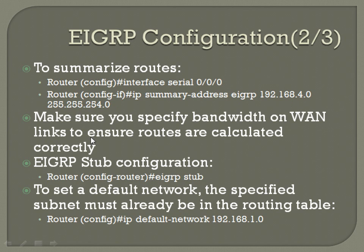Make sure you specify bandwidth on WAN links to ensure routes are calculated correctly, using the bandwidth command. On serial interfaces like T1s, you might have a fractional T1 and not be getting the full 1.544 megabits per second. EIGRP, unless you specify the bandwidth, always assumes every serial link is a full T1. So if you've got a link that's only 64 kilobits, specify 'bandwidth 64' — otherwise EIGRP may presume it's the best route because it assumes higher bandwidth when it actually isn't.